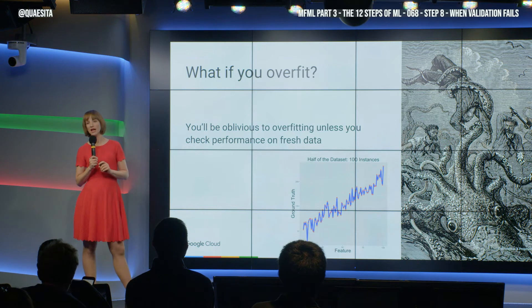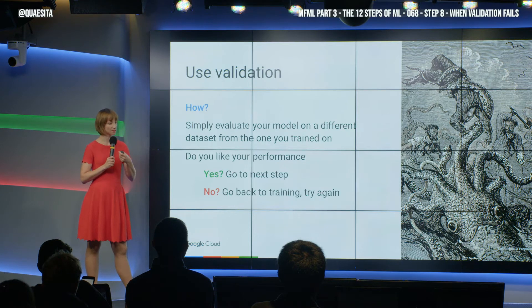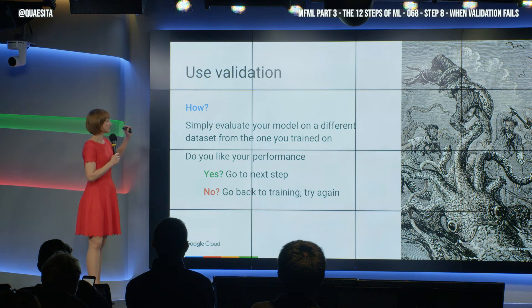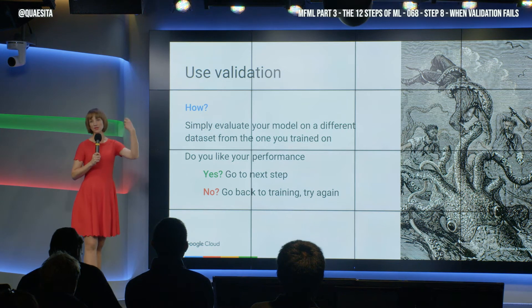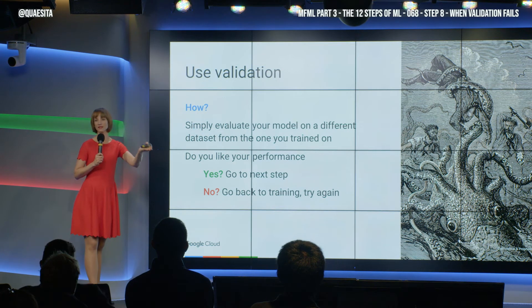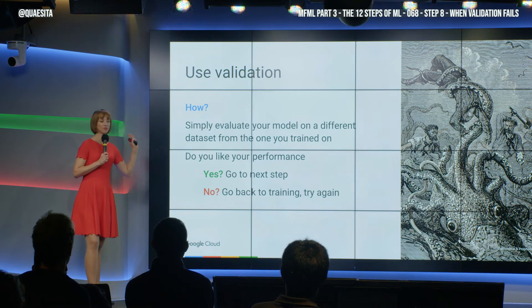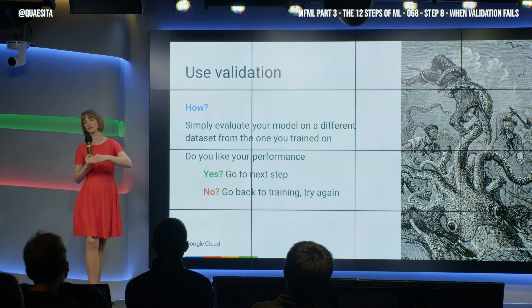You won't know that this has happened to you unless you're able to check on fresh data. So you'd better have some fresh data for checking. This is where you validate. You simply take your model and get your performance on a different set than the one you trained it on. If you don't like your performance, go back to training. If you do, go to the next step.